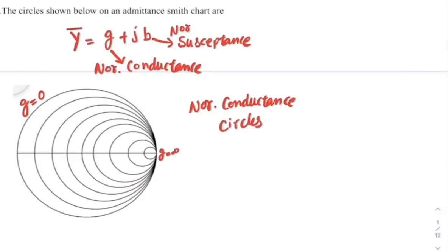In the question, if it is given as an impedance Smith chart, then these circles are normalized resistance circles.